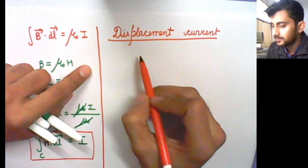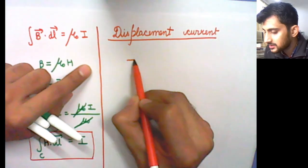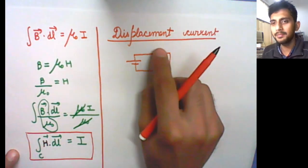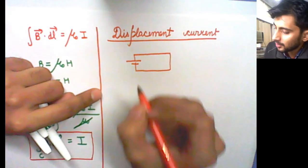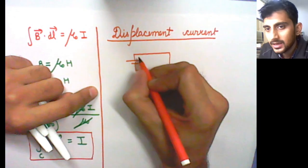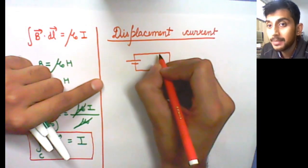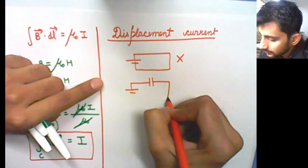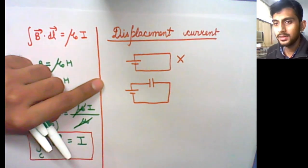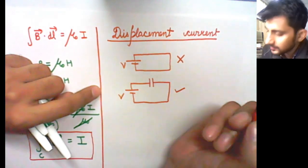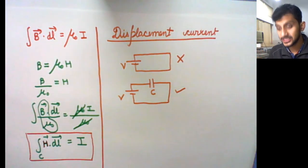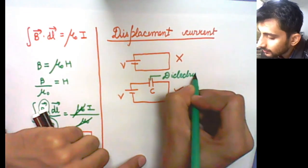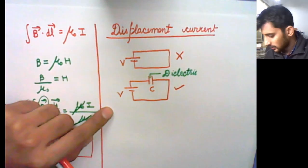To understand displacement current, consider a loop in which current was flowing — suppose you had a battery causing current flow in it. There is no problem here; Ampere's law was valid. You can find the magnetic field and intensity. The problem arises if this circuit is broken by a capacitance. Now the circuit includes a voltage battery V and a capacitance. Inside the capacitor between the plates there is a dielectric substance, and dielectric is not conducting.